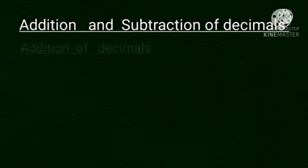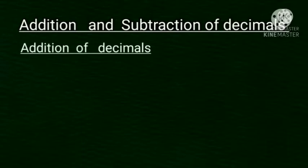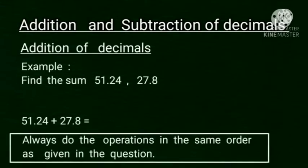Let us start addition of decimals. For example, 51.24 plus 27.8. While adding decimals, the numbers must be written such that the decimal points of all the addends are in the same column. So, the sum should have the decimal point exactly below the decimal points in the addends.